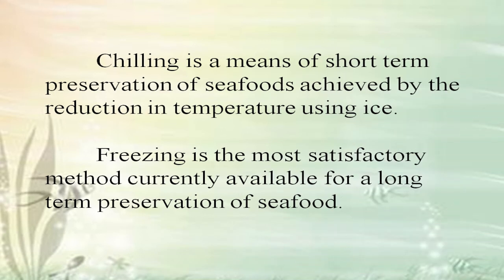Chilling is a short-term preservation method for seafood, achieved by reducing the temperature using ice. Freezing is the most popular and currently widely used method for preservation of seafood. In this method, fish is stored at a constant temperature level. After freezing, frozen foods are stored at or below minus 18 degrees Celsius. Fluctuation of this temperature will cause spoilage.